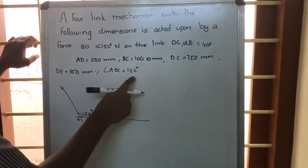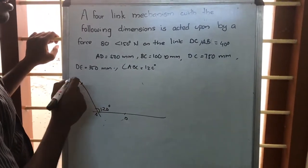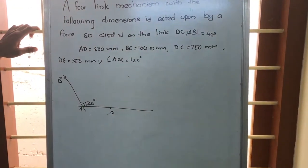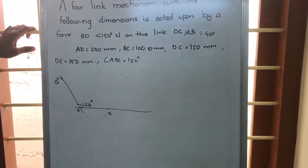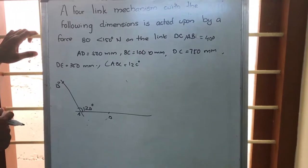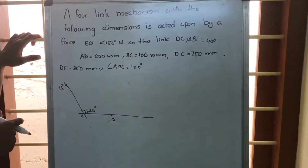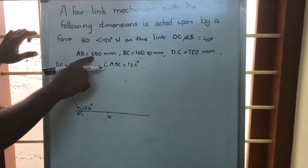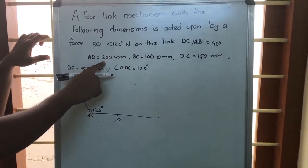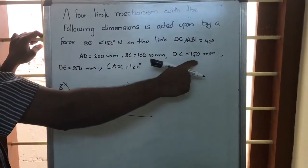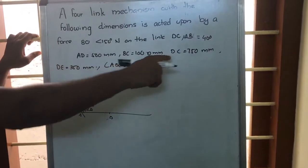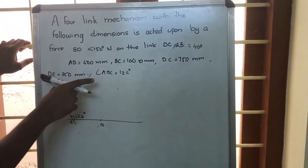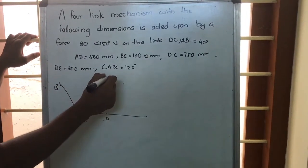Then BC — this is point B. BC is 100 centimeter and DC is 7.5 centimeter. We can only draw this by scale, so take a scale. Let us take that 10mm equals 10 centimeter. So 5mm will be 5cm, 4mm will be 4cm, and 7.5mm will be 7.5cm. Take 10 centimeter in compass with B as center and draw an arc of 10 centimeter.